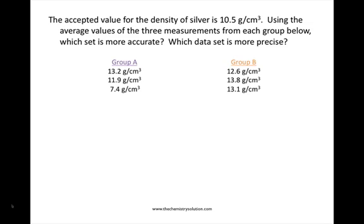If we look at the values from group A and find the average value, we come up with an average of 10.8 grams per centimeter cubed. If we take the average value from the measurements of group B, we come up with a value of 13.2 grams per centimeter cubed.